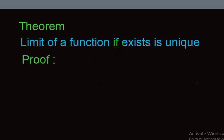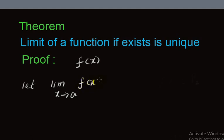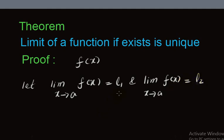We prove the theorem that the limit of a function, if it exists, is unique. Consider a function f(x) and assume that there are two limits: limit as x approaches a of f(x) equals l₁, and limit as x approaches a of f(x) equals l₂. We will prove that these two limits are the same, i.e., l₁ = l₂. If we prove l₁ = l₂, the theorem will be proved.